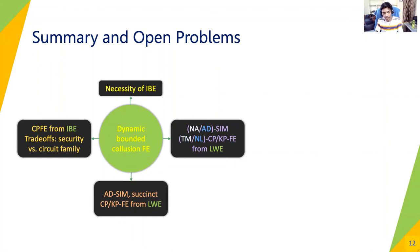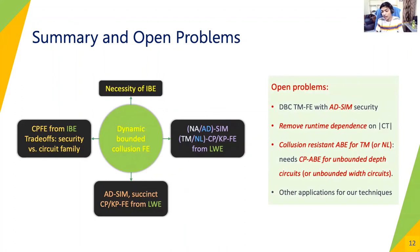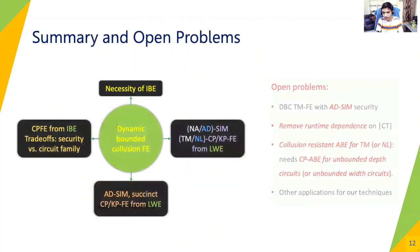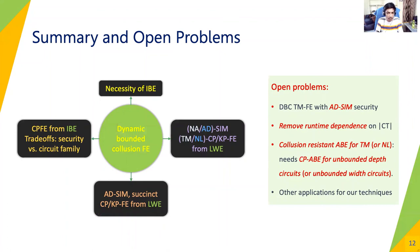We would like to end with some open problems. These include removing the runtime dependence on the size of the ciphertext — recall that we modeled TMFE such that the encryptor specifies the upper bound on the runtime of a Turing machine on that input. We also leave constructing TMFE in the dynamic bounded collusion model satisfying stronger adaptive simulation security as an open problem. Additionally, we leave finding applications of our techniques in the realm of attribute-based encryption, specifically CPABE for unbounded depth circuits, which is considered a major open problem. Thanks.